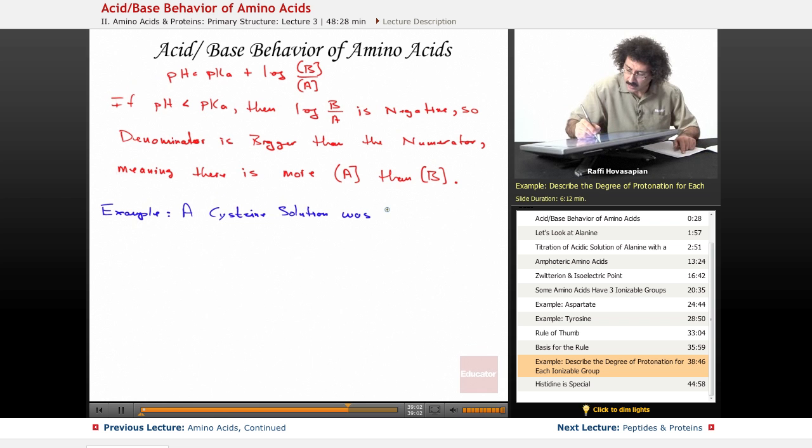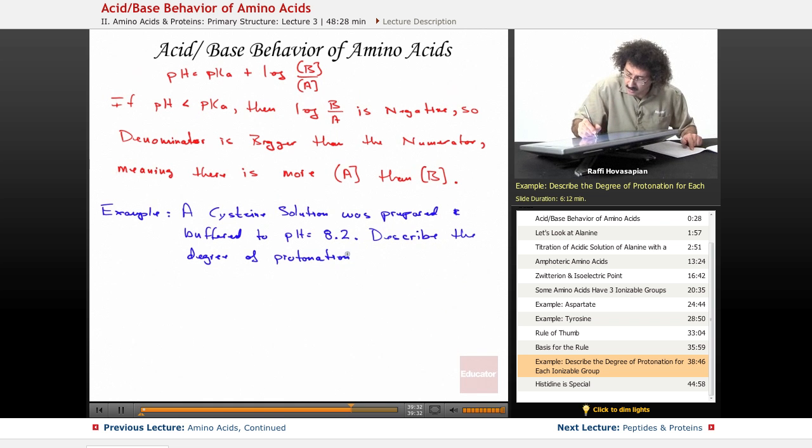The solution was buffered to a pH equal to 8.2. I would like you to describe the degree of protonation for each ionizable group.